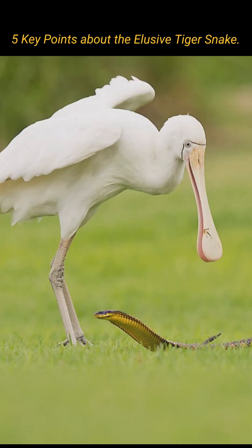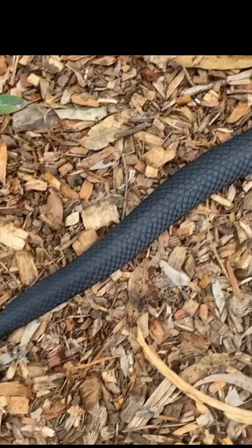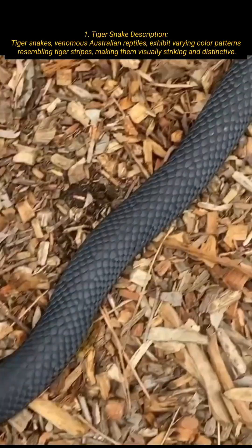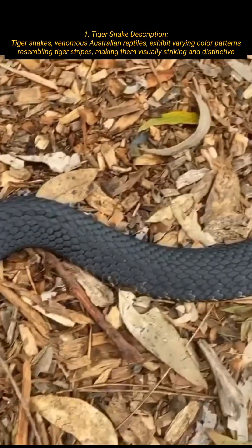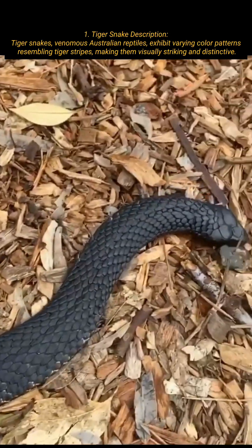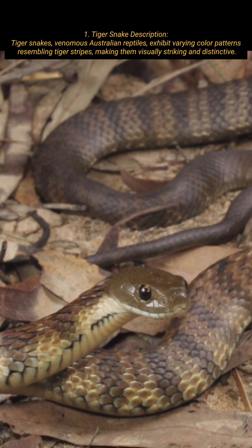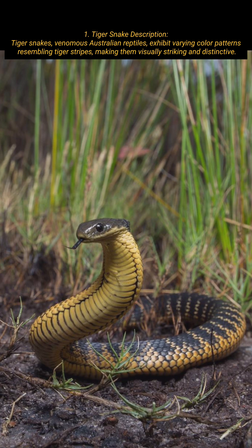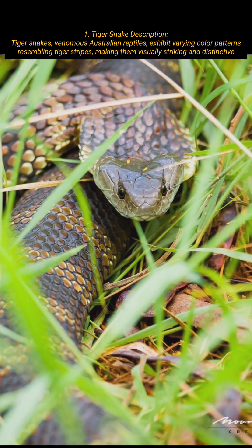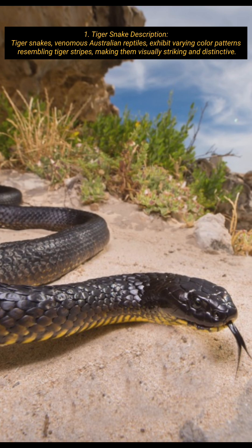5 Key Points About The Elusive Tiger Snake. Tiger snakes are venomous Australian reptiles that exhibit varying color patterns resembling tiger stripes, making them visually striking and distinctive.